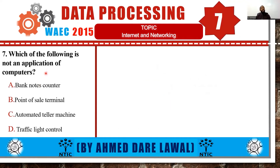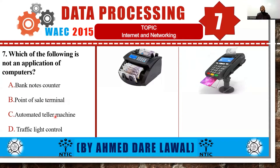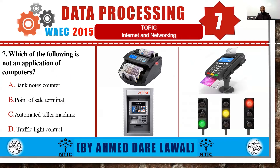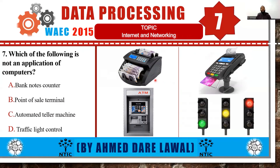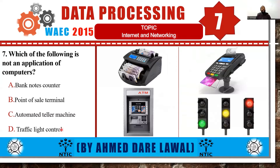Moving forward to question 7: which of the following is not an application of a computer? Is it a five-notes counter, a point-of-sale terminal, an automated teller machine, or traffic light control? A computer is an electronic device that accepts data, processes it, and gives output as meaningful information. The first three devices work in that way, but traffic light control is more of an electrical device. So the answer is option D, traffic light control.